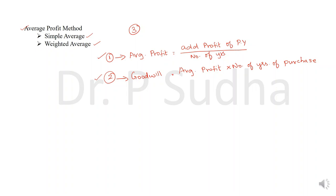If you are working out the answer under the weighted average method, you will assign weights. Higher weightage will be given to recent year profits and less weightage to previous years' profits. For example, if you are adding profits of 2006, 2007, 2008, and 2009, for the most recent year the weightage will be 4, then 3, 2, and 1. After assigning weights, you calculate weighted average profit and then calculate goodwill.